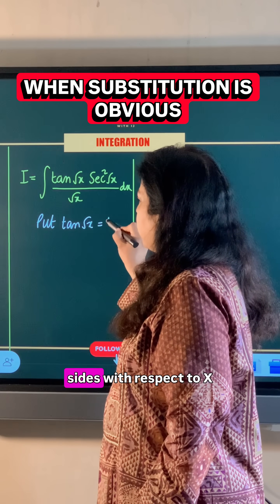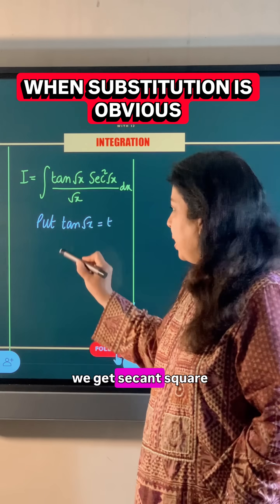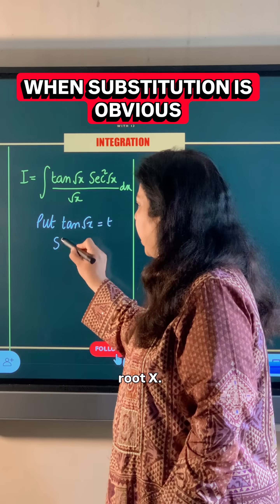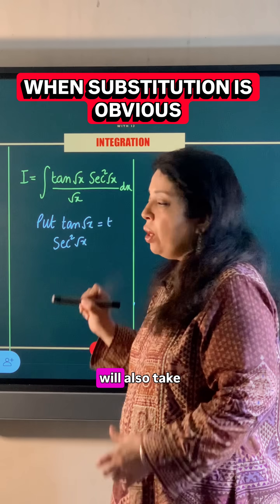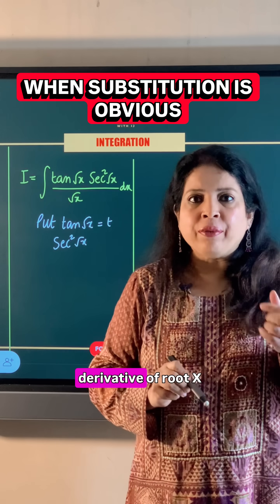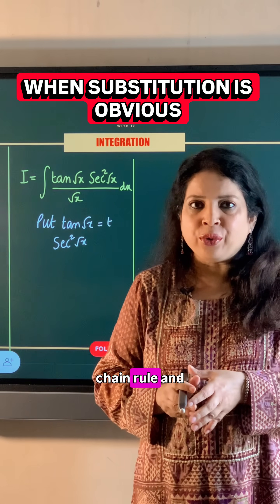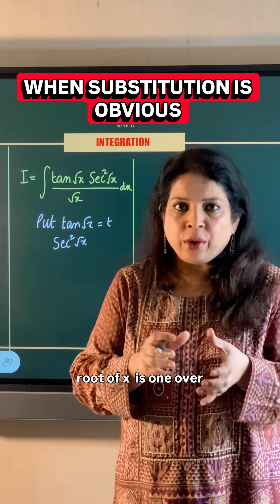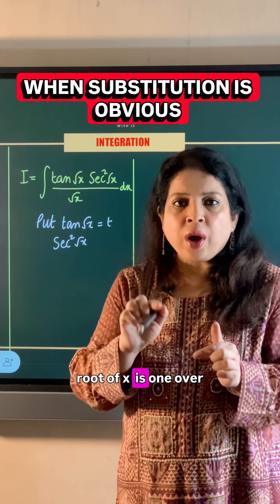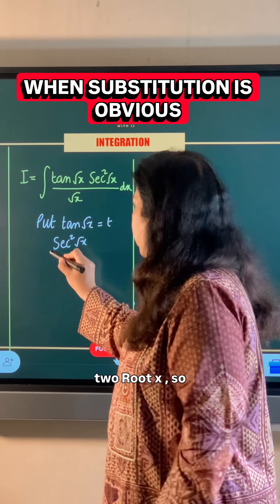Differentiating both sides with respect to x, we get sec²(√x), and along with this we take the derivative of √x according to the chain rule. The derivative of √x is 1 over 2√x.